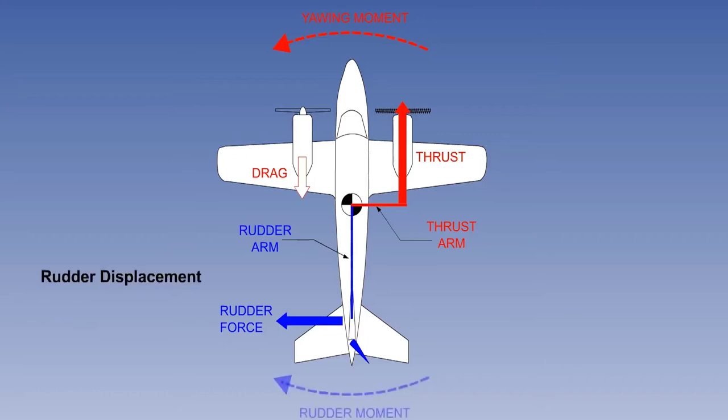At this initial stage, the pilot's ability to counteract the asymmetric yawing moment would depend on the rudder displacement, which affects the rudder force, the IAS, also affecting the rudder force, and the CG position, affecting the rudder arm.